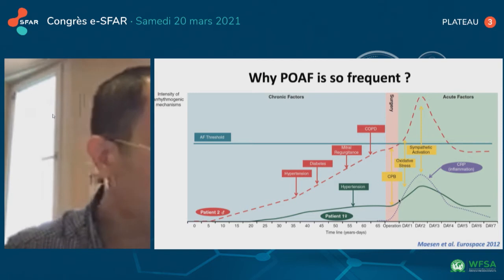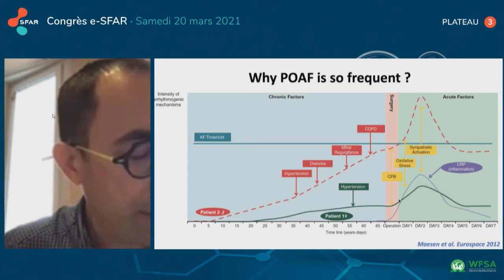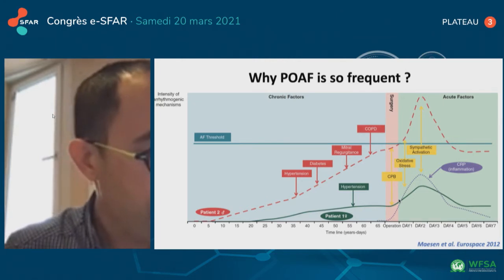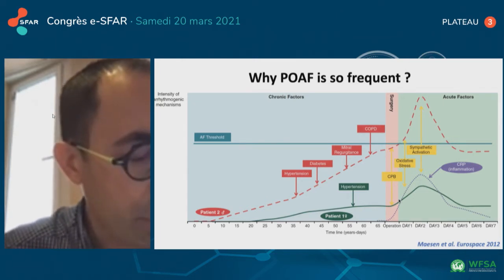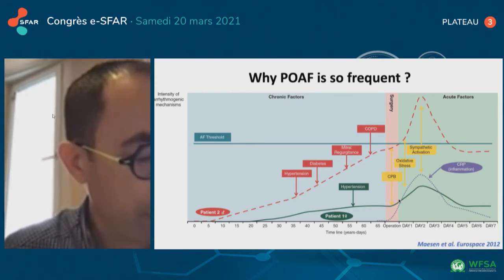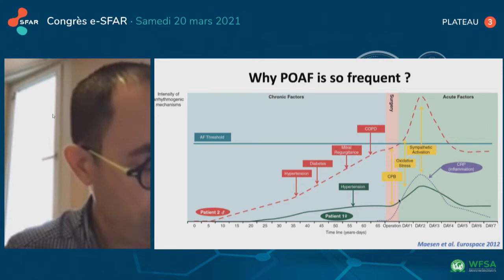This figure depicts the time course of substrate development and surgery-related factors in the occurrence of atrial fibrillation. The time course of pro-arrhythmic mechanisms is depicted in two hypothetical patients undergoing cardiac surgery. Both chronic as well as acute factors related to the operation on day zero are shown. When the intensity of pro-arrhythmic factors reaches a certain threshold, atrial fibrillation occurs.